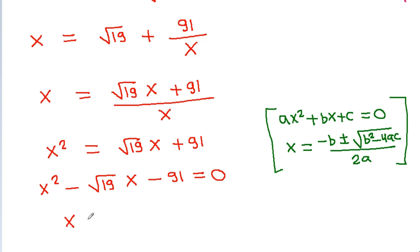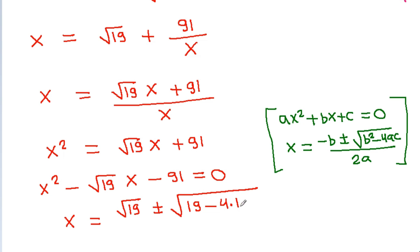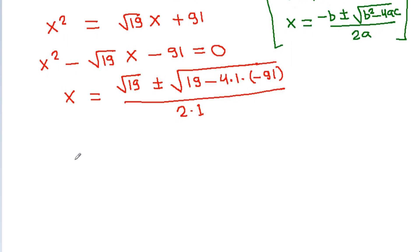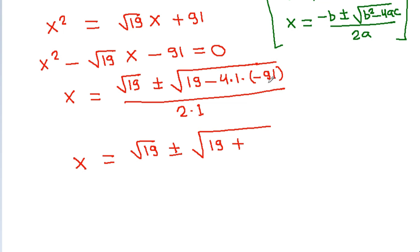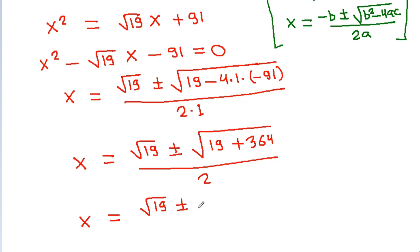x is equal to minus b plus or minus square root of b squared minus 4ac by 2a. So here x will be equal to square root of 19 plus or minus square root of 19 squared minus 4 times 1 times negative 91, which is square root of 19 plus 364, by 2. And x is equal to square root of 19 plus or minus square root of 383 by 2.